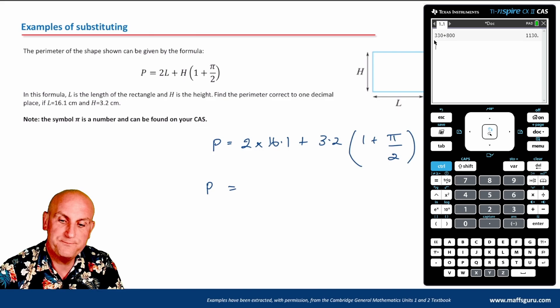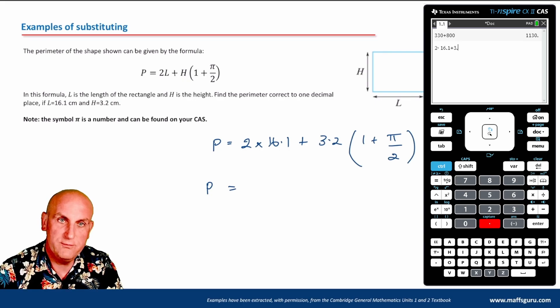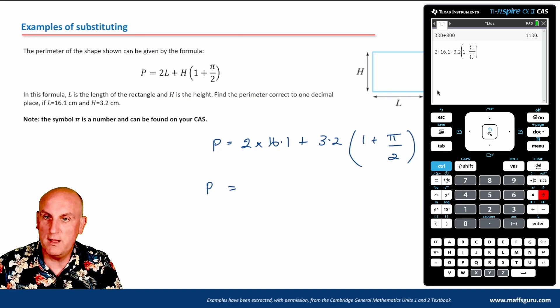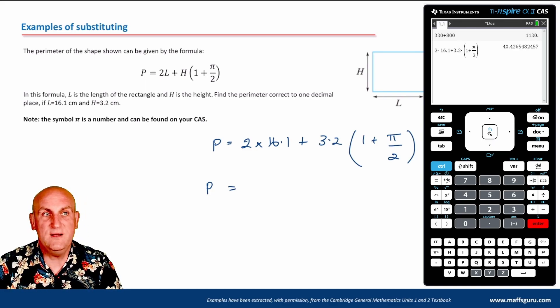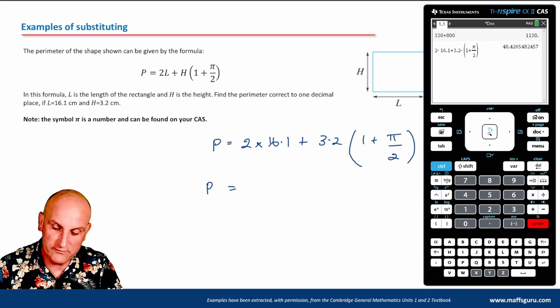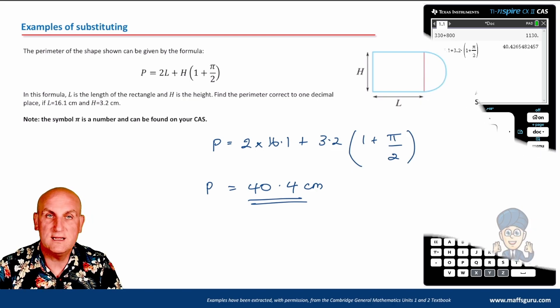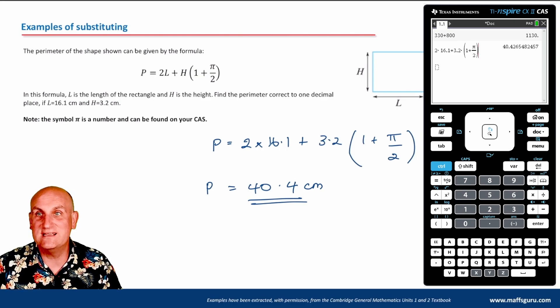Let's just get my calculator to do the hard work for me. And I can type it in exactly as it is. 2 times 16.1 plus 3.2, open brackets, 1 plus, let's do my fraction-y thing. Let's hit the PI button and PI divided by 2 and hit enter. And lo and behold, it's done for me. Find the perimeter correct to one decimal place. So in that situation, reading off my calculator would be 40.4 centimeters. Doesn't matter how complicated it is. Your calculator did the hard work.